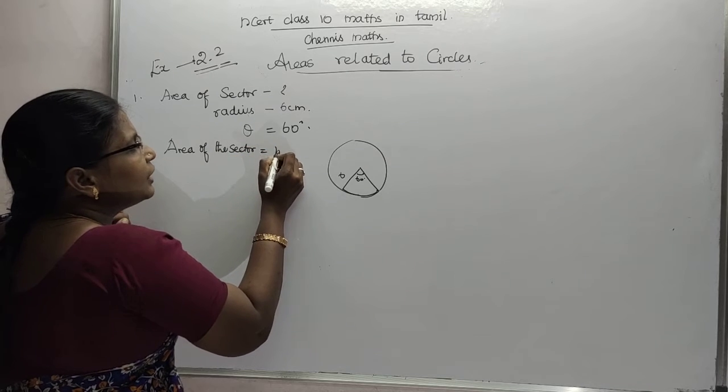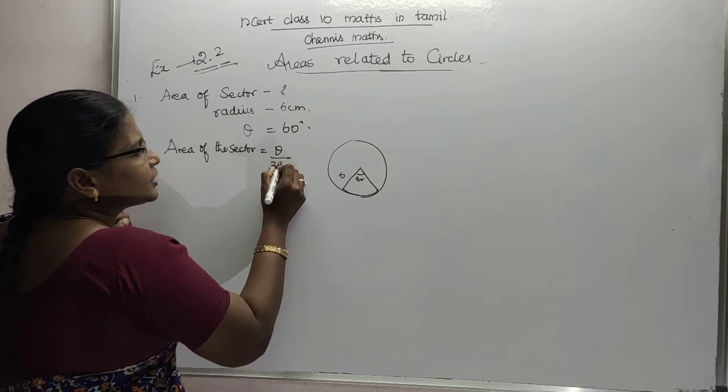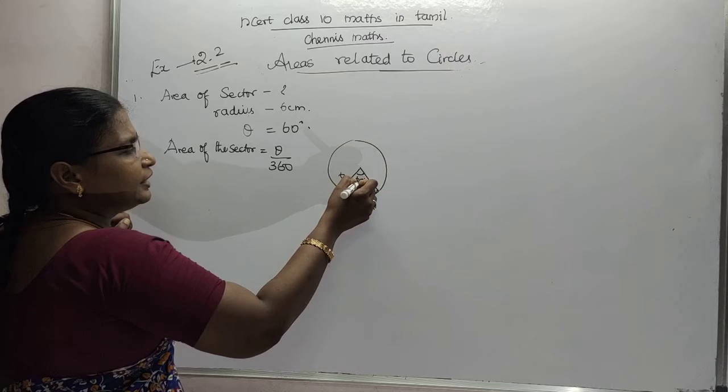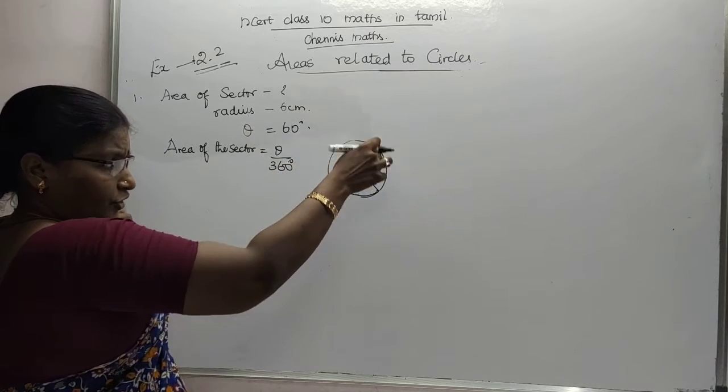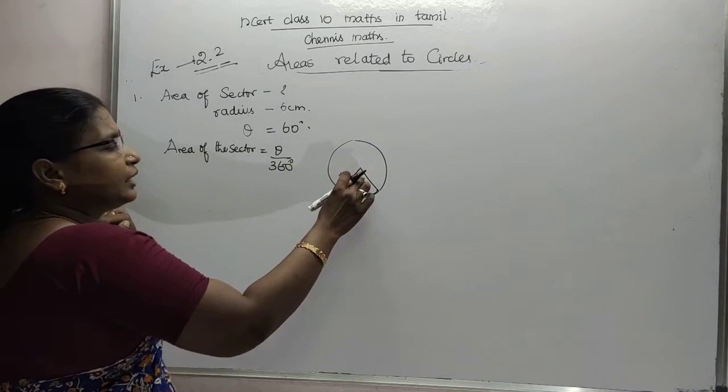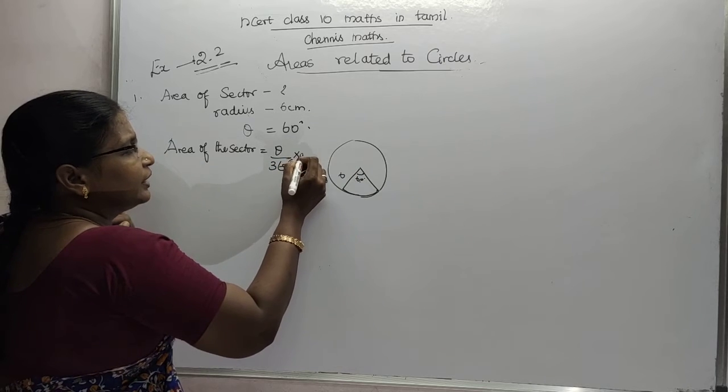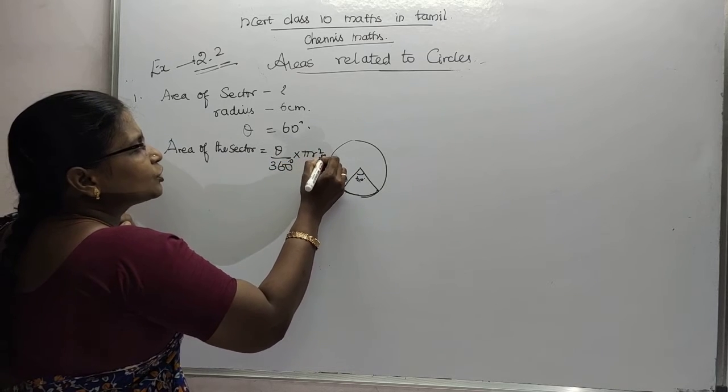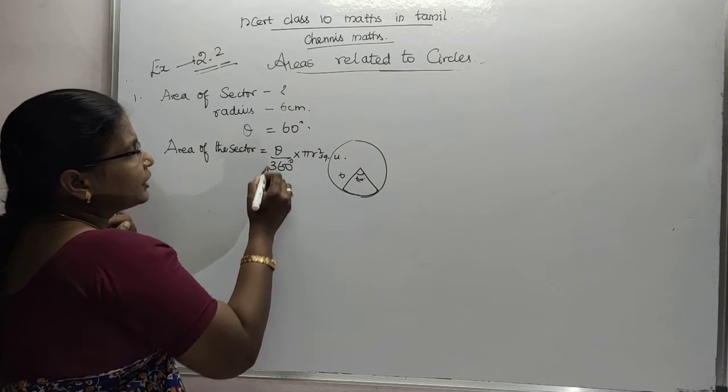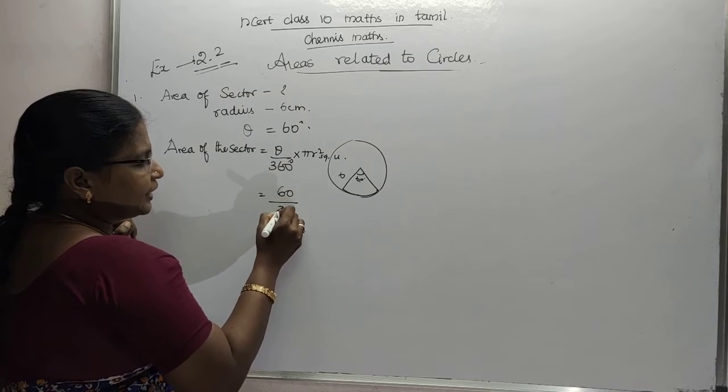Then area of the sector formula: area of the sector of a circle is nothing but theta by 360. This theta, theta is the angle, into pi r square square units.